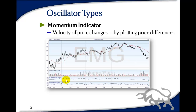The momentum indicator, like oscillators in general, leads the price action. Remember that moving averages can only lag price action because they're reporting what happened a few days ago. Momentum indicators, the way they're calculated, allow us to lead the price action. Many traders will buy or sell when the indicator crosses zero — trading with the trend. If the momentum indicator comes up through zero you should buy, providing you're in an uptrend. If it goes down through zero you would sell short, as long as it's in a downtrend.